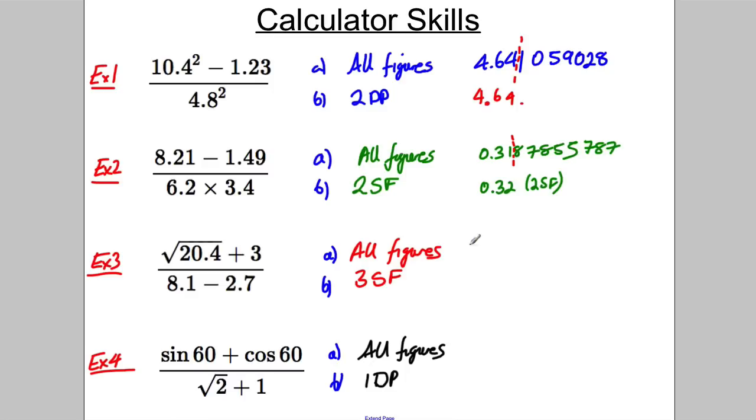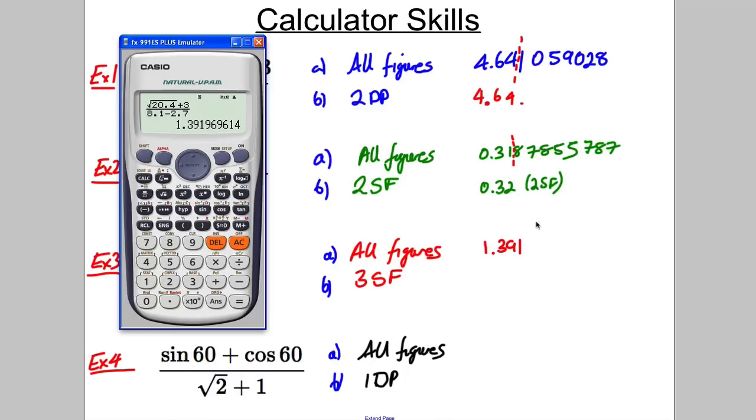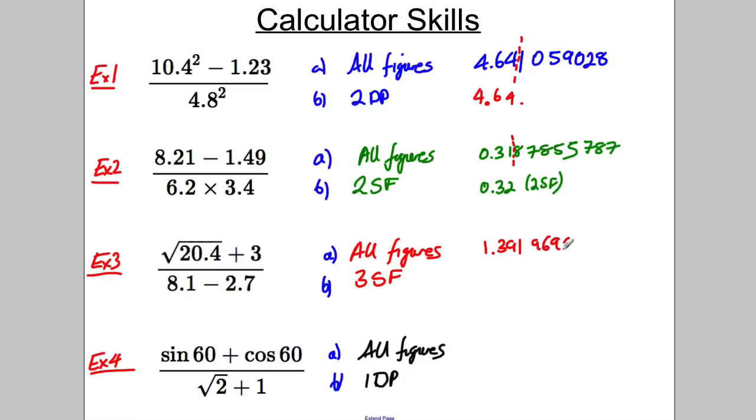And when you do that, you get 1.39196969414. Now you want to round that to 3 significant figures. There's the first significant, the second, the third. Put your line there, that one keeps that the same. 1.39 to 3 significant figures.